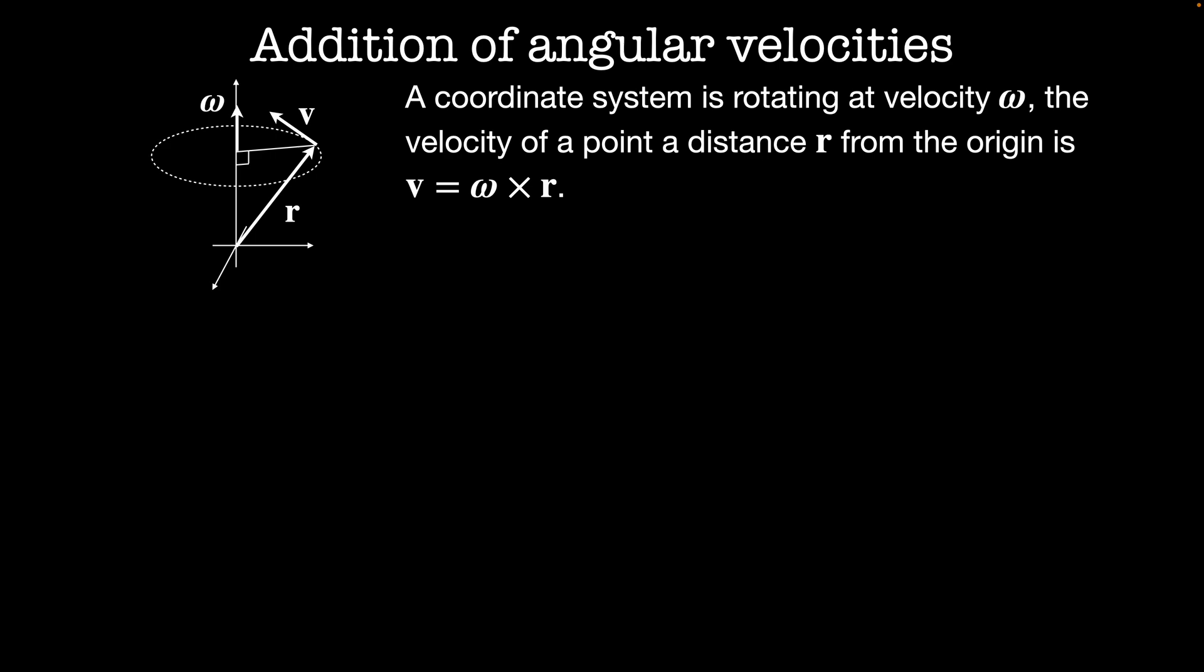So this relates the time derivative dr by dt to the position via the angular velocity vector, and we can extend this to derivatives of other quantities too. In rotating coordinate systems, if we have some quantity u, we can relate the rate of change of u, that is du by dt, in this rotating coordinate system to that angular velocity. We find that the rate of change of this quantity u is given by the angular velocity cross u.